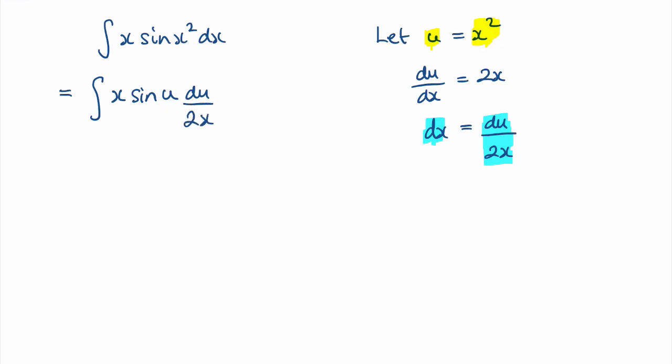You might notice that this x here will cancel with this one. And we can also bring this 2 here, it's actually a half, we can bring that outside the integral. So we've got a half, the integral of sine u du.